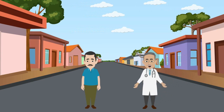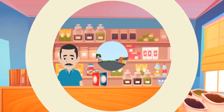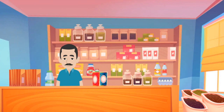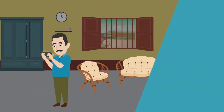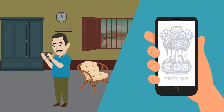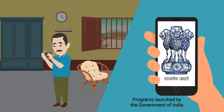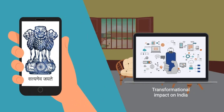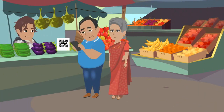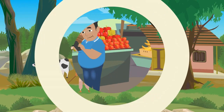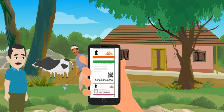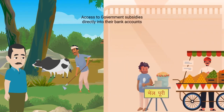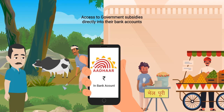Meet Rahul, a young man who lives in Muradabad in India. He runs a grocery store that his father set up and lives with his wife and parents in their ancestral home. Rahul is an avid user of UPI and Aadhaar, which are large programs launched by the Government of India that have had a transformational impact on India. He has taught his parents how to use UPI to pay small shops and vendors, and has witnessed how Aadhaar is enabling the poorest Indians and those in remote corners to access government subsidies directly into their bank accounts.